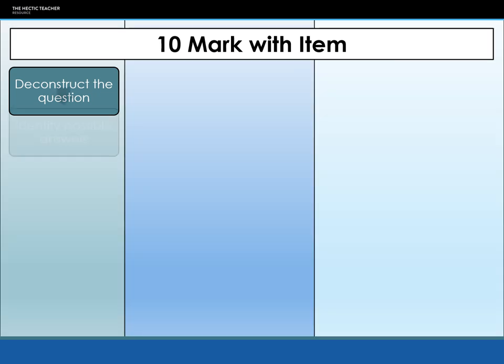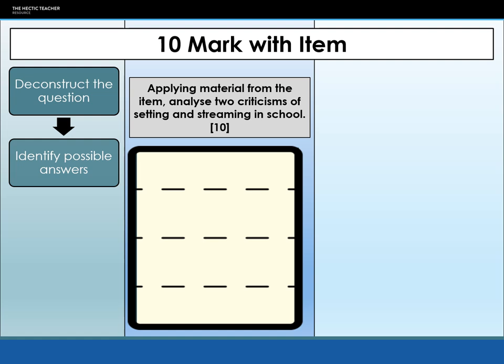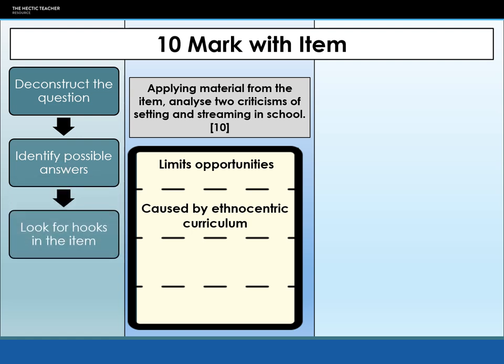Our next stage is to identify the possible answers. I'm going to give you two, and then you're going to go away and come up with your own. The two I'm going to give are: it limits opportunities, and it is caused by an ethnocentric curriculum. By setting and streaming students, we are limiting their opportunities to show their attainment level or their possible attainments. Setting and streaming is also caused by an ethnocentric curriculum which disadvantages ethnic minority students who tend to be put into lower sets and streams, possibly due to them not being able to access or connect with the curriculum being taught.